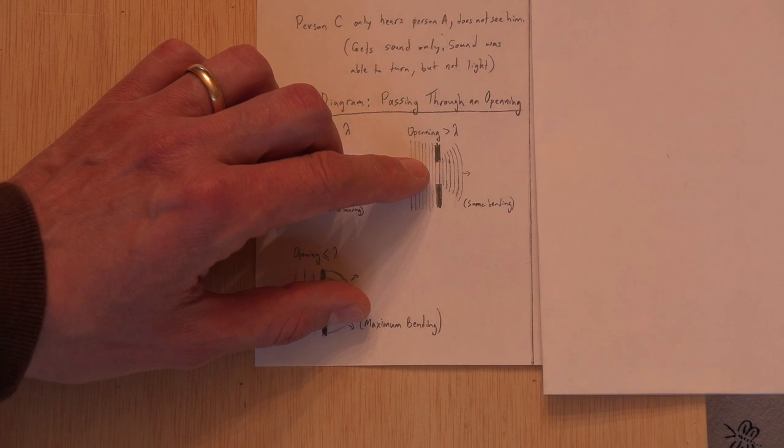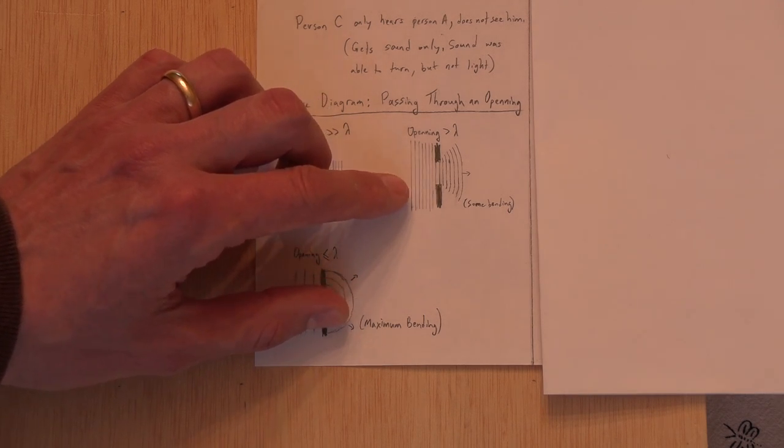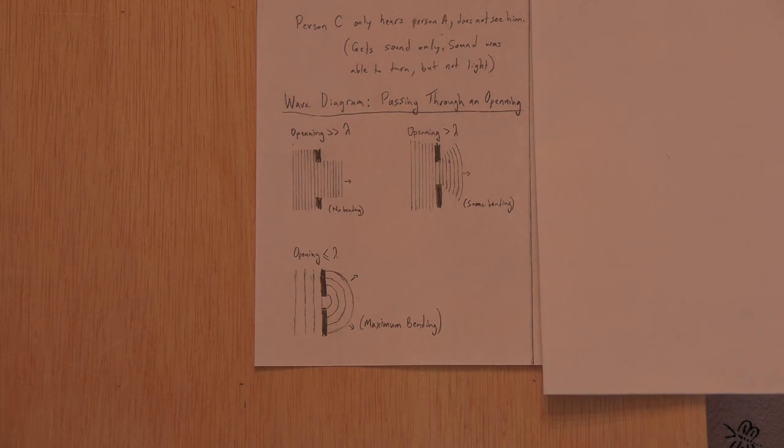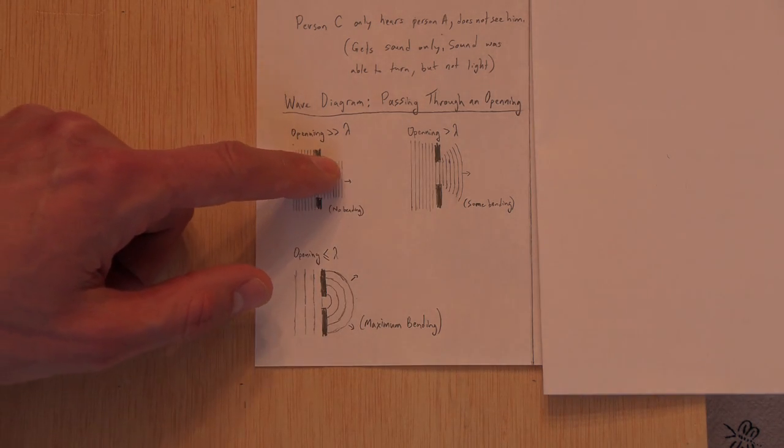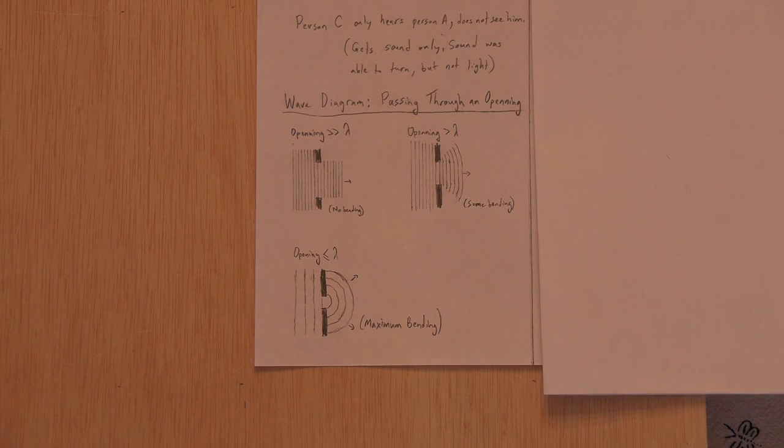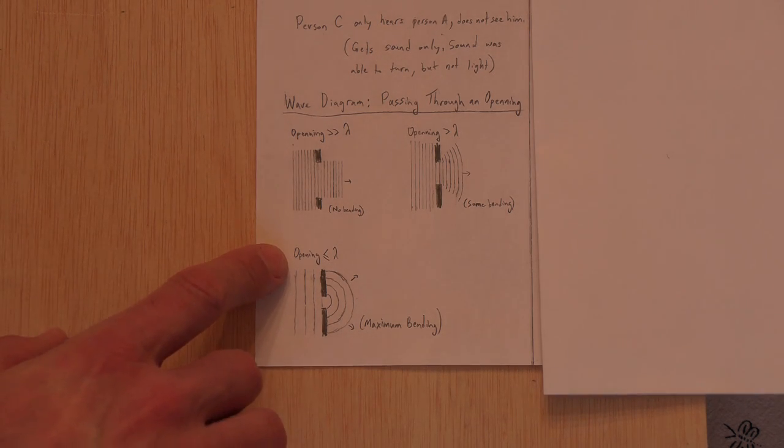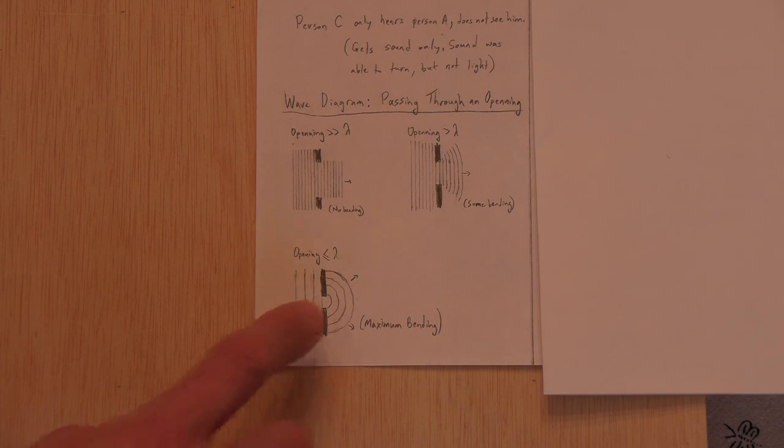And so what happens is now with the wave, the opening getting smaller compared to the wavelength, but still bigger, there's some bending. So you see this wave is not a crisp shadow here. It actually turns a little bit at that corner.